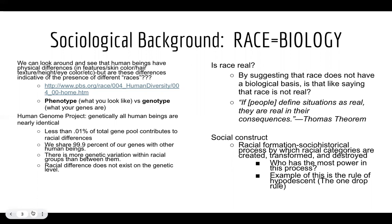Genetically, when you look at the genotype of human beings, we are nearly identical. Less than 0.01% of the total gene pool contributes to racial differences, meaning we share 99.9% of our genes with all other human beings. That is way less genetic variation than different breeds of dogs or cats — even fruit flies have more genetic variation than human beings have between each other. So even though our phenotypes might be very different, in terms of our actual genes, we're not that different.